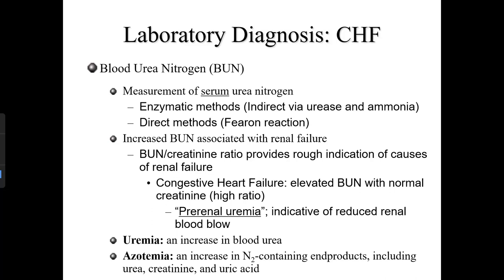Laboratory diagnosis of congestive heart failure includes an elevated blood urea nitrogen (BUN), measured using enzymatic or direct methods. An increased BUN is also associated with renal failure, so the BUN-to-creatinine ratio provides a rough indication of the cause. In congestive heart failure you see elevated BUN with normal creatinine; in renal disease you would have elevated BUN with low creatinine clearance.